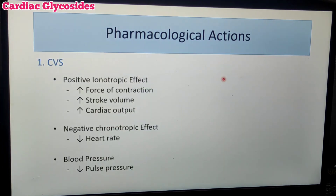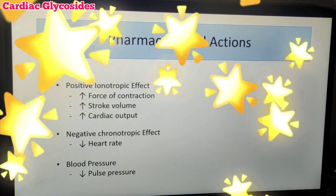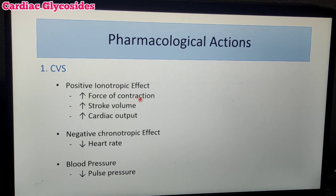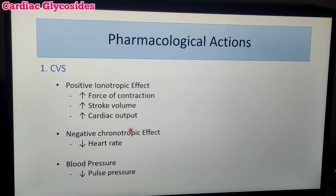This is the mechanism of action. Moving to pharmacological actions, the main effects are on the cardiovascular system. First is the positive inotropic effect — that is, increased force of contraction. This positive effect increases force of contraction, which eventually leads to increased stroke volume. With increased stroke volume, cardiac output is also increased.